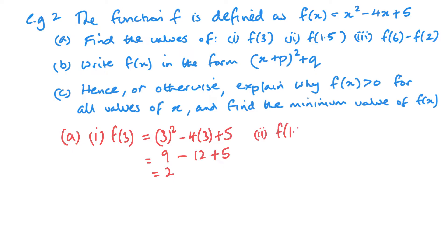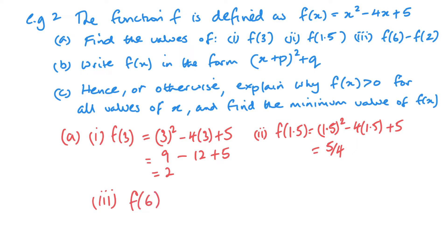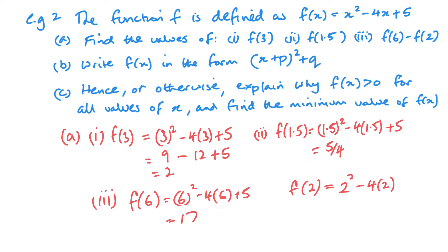Now substitute in 1.5 — same thing: 1.5 squared minus 4 lots of 1.5 plus 5. You're more than welcome to use your calculator here. And then f of 6: 6 squared minus 4 lots of 6 plus 5 gives 17. And f of 2 is 2 squared minus 4 lots of 2 plus 5, which is 4 minus 8 plus 5 equals 1. So f of 6 minus f of 2 is 17 minus 1, which is 16.